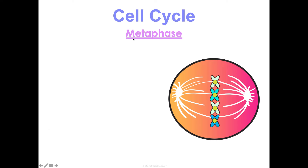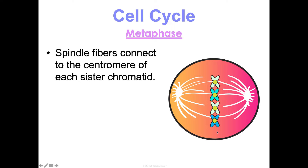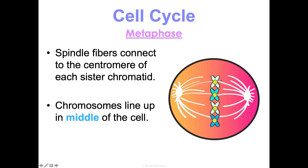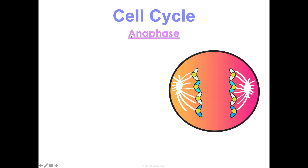Metaphase — think 'metaphase middle.' Your chromosomes line up in the middle of the cell. Spindle fibers connect to the centromeres, that condensed central region, and pull the sister chromatids to the center of the cell. They line up single file so that they'll split and divide evenly, with half going one way and half going the other during anaphase.